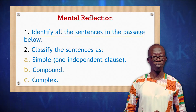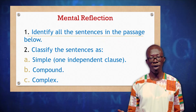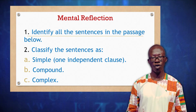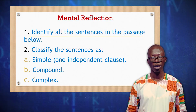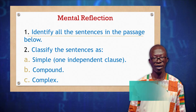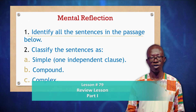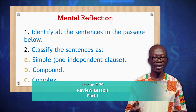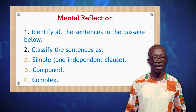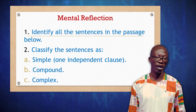So a sentence could be in simple form — the simple sentence — made of only one clause. A sentence could be made of two or more clauses. And this led us to other forms of sentences, where we looked at compound sentence and complex sentence. So we are going to identify all the sentences in the passage below by applying this knowledge you've learned, in our first question.